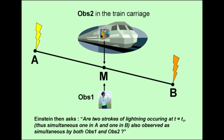Einstein then asks: are two strokes of lightning occurring in A and B and happening simultaneously at a time instance T1, also observed as simultaneous by both OBS-1 and OBS-2?